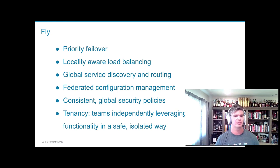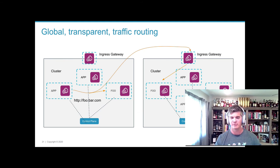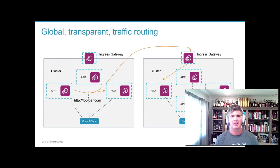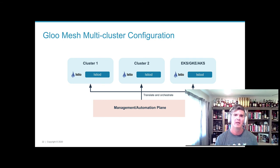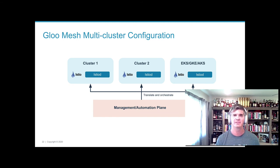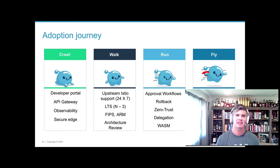By treating multiple service meshes as a federated unit, you get extremely powerful network routing. Your services stay simple — focused on business logic. When a call is made on the network, service discovery happens, client-side load balancing happens, global service discovery and failover happen, along with timeouts, retries, and circuit breaking — all making your application a better-behaving citizen on the network. With multiple clusters, VMs, and varied infrastructure, you get consistent configuration, consistent security policies, consistent service discovery, and global load balancing provided by this federation.